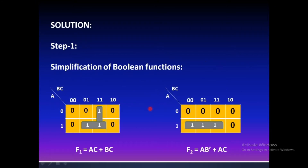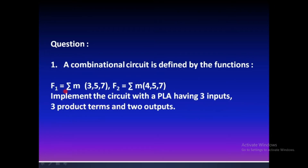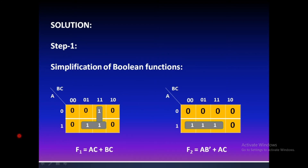This problem is quite simple. The first step is simplification of the Boolean functions using a Karnaugh map. Since three minterms are given, I have plotted a three-variable K-map. For F1 with minterms 3, 5, and 7, you will have two groups — one vertical group and one horizontal group.